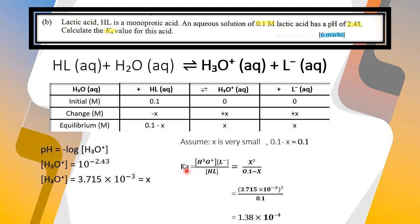We write the expression of Ka and then substitute the value: x squared over 0.1 minus x. So we substitute the value of x that we got from here and substitute the value of 0.1. 0.1 minus x equals 0.1, so we write 0.1 here. So we will get 1.38 times 10 to the power of negative 4.